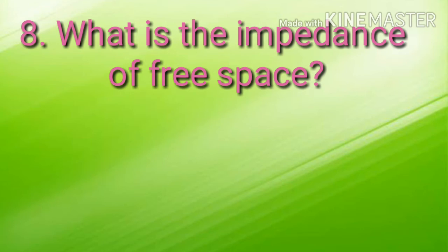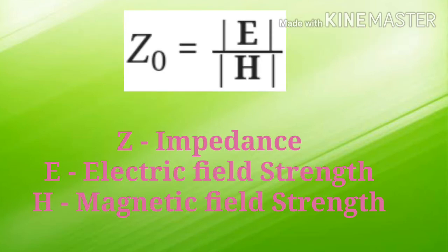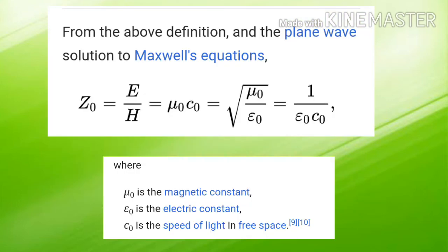The next question was: what is the impedance of free space? We know that Z₀ = E/H, where Z is the impedance, E is the electric field strength, and H is the magnetic field strength. Z₀ = E/H = μ₀·C₀ = 1/(ε₀·C₀), where μ₀ is the magnetic constant, ε₀ is the electric constant, and C₀ is the speed of light in free space. You must learn all these equations because the options will be varying, so be familiar with them.